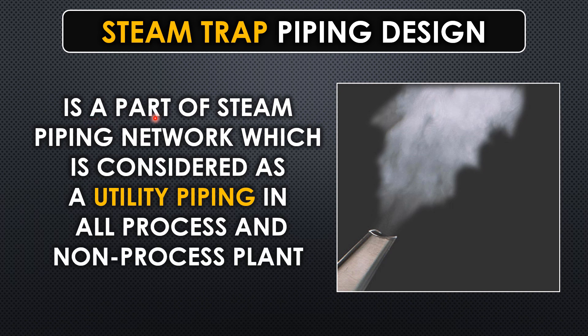Steam trap piping is part of a steam piping network, which is considered a utility piping in all process and non-process plants. It is not only used in oil and gas or refineries — it is also used in FMCG plants, glass manufacturing plants, power plants, and more. That's why it is considered one of the most widely used piping systems, and generally the steam piping network comes under utility piping.